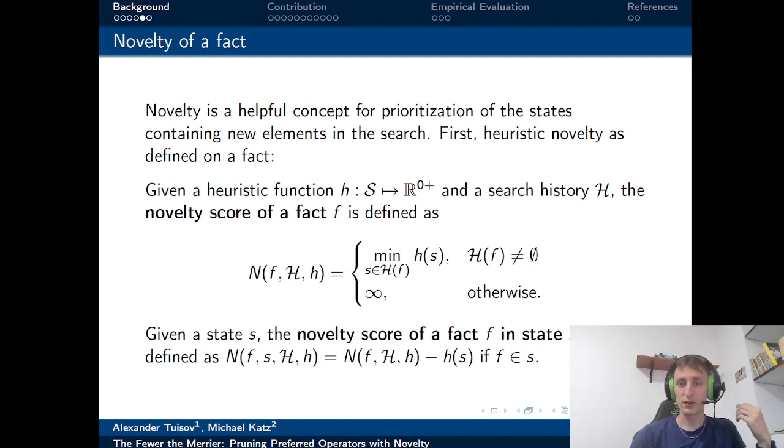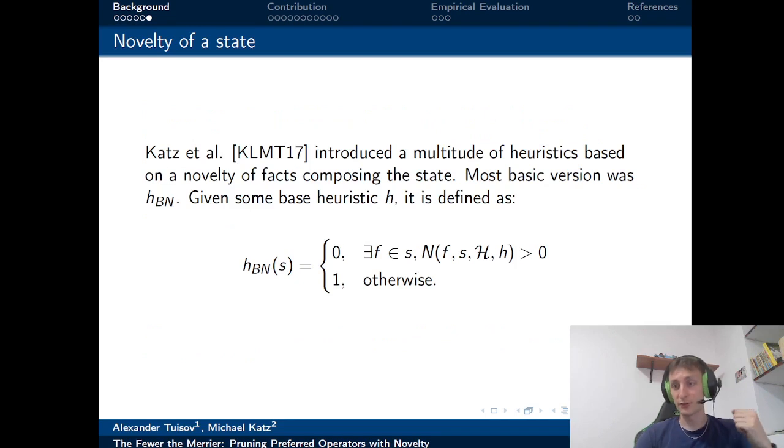And we can define novelty score of a fact in some particular state s, and we define it as the novelty score of the fact minus the heuristic value of this state.